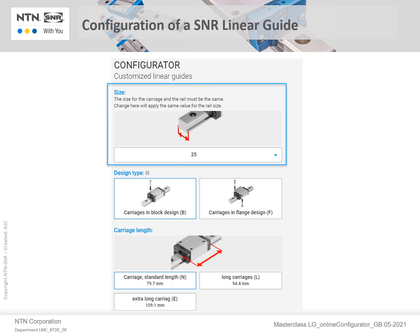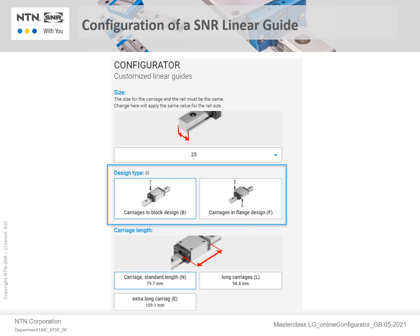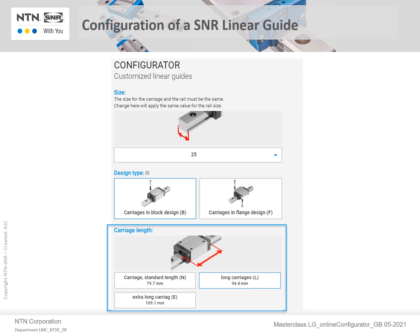You will notice that the carriage size was automatically set according to the earlier chosen size of the rail — in other words, the size for the carriage and the rail must match. Then you can choose between block and flange type carriages. In this example, the block design will remain. Following that, the length of the carriage must be determined. In this example, we changed from the standard length carriage to the long carriage design designated by L.